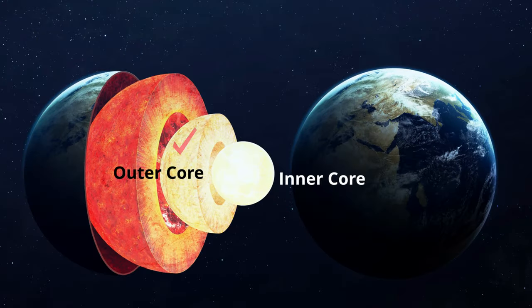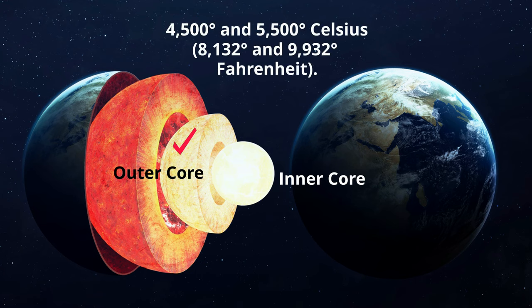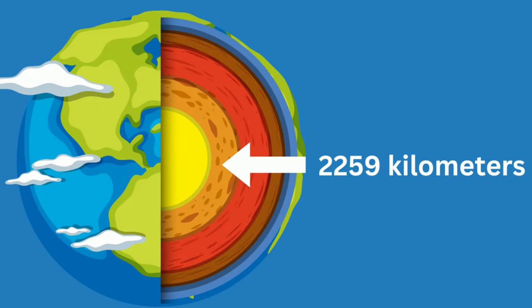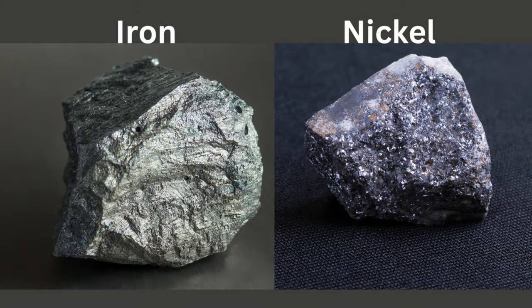Now let's move to the outer core. The outer core is very hot, with temperatures ranging from 4,500 to 5,500 degrees Celsius. It is very dense, 9.9 to 12.2 grams per centimeters cubed. It is roughly 2,259 kilometers thick, and it's made up of iron and nickel.